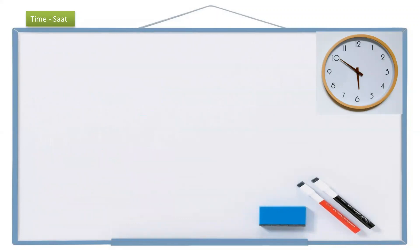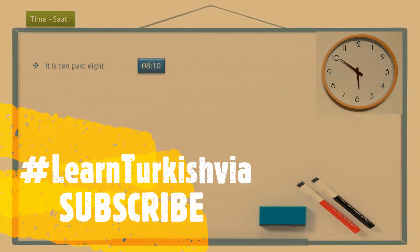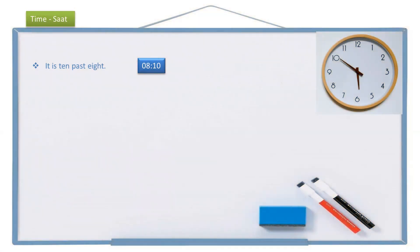Now let's continue with more complicated ones. The sentence is: it is 10 past 8. In Turkish, we don't say 'it is 10 past 8' — we say 'it is 10 minutes passing 8.' Instead of past, we say passing. It is: saat, 10 — on, passing — geçiyor. Pass is geç, passing is geçiyor. 8 — sekiz, but 8 takes the accusative suffix -i, so sekizi. It is 10 past 8: saat sekizi on geçiyor.